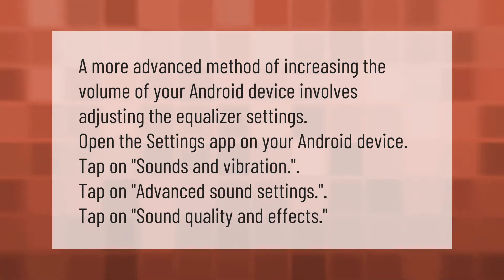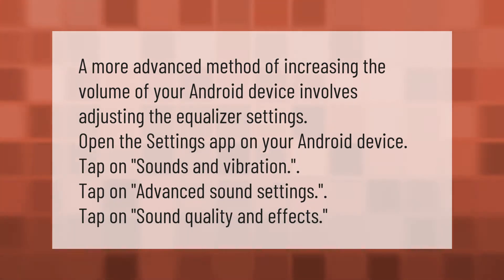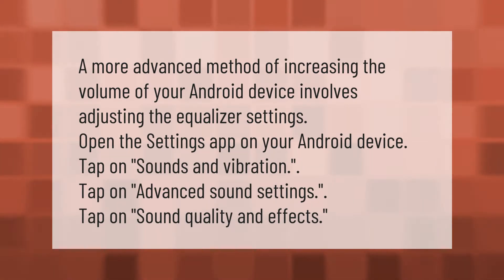A more advanced method of increasing the volume of your Android device involves adjusting the equalizer settings. Open the Settings app on your Android device, tap on Sounds and Vibration, tap on Advanced Sound Settings, then tap on Sound Quality and Effects.